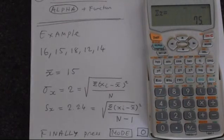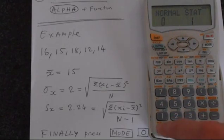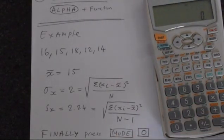Finally, to get your calculator back to normal, you simply press mode and then 0. That's mode 0 and your calculator is back to where it was.